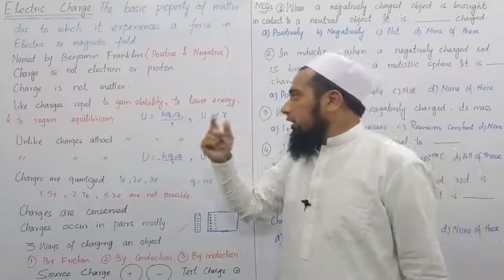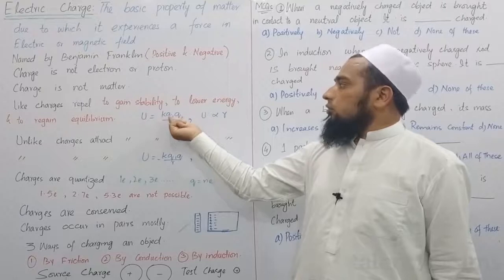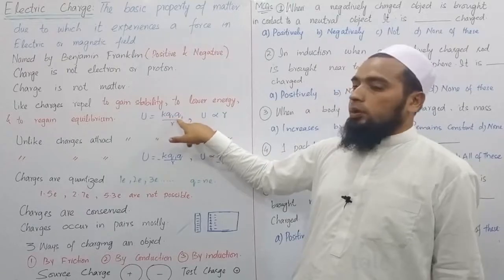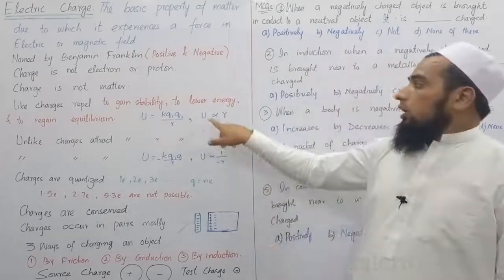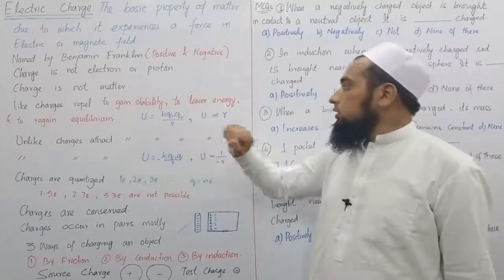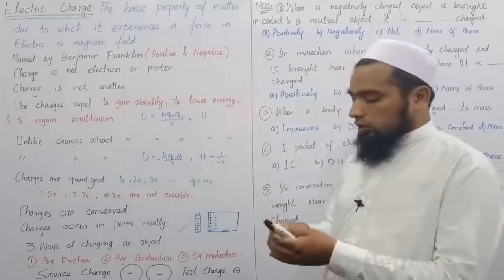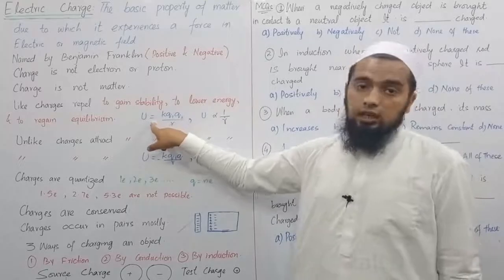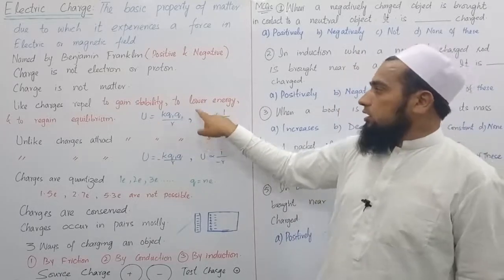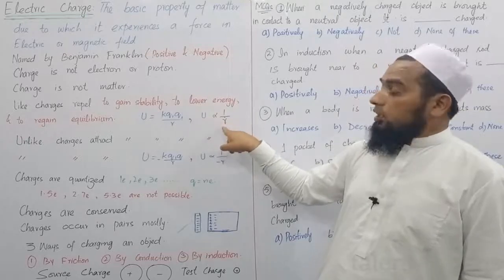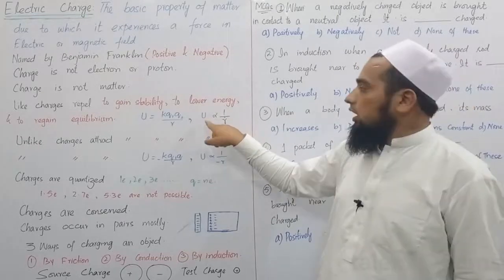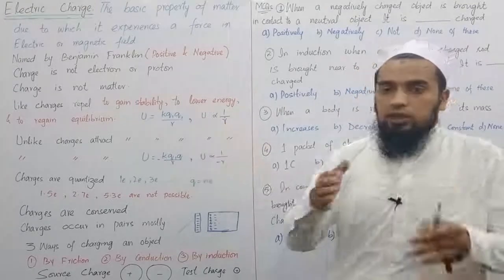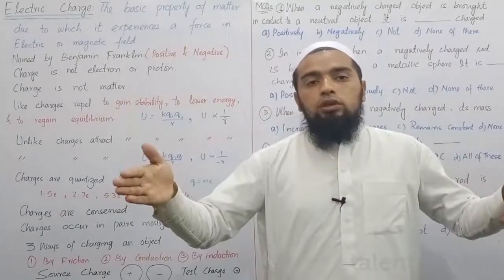Consider two positive charges. When we place positive charges, positive multiplied by positive gives a positive result. Potential energy U is inversely proportional to r. If we want to reduce energy, we must increase the distance. Since it is an inverse relation — if energy needs to be less, r must be more — increasing r means the charges move apart from each other, i.e., they repel.